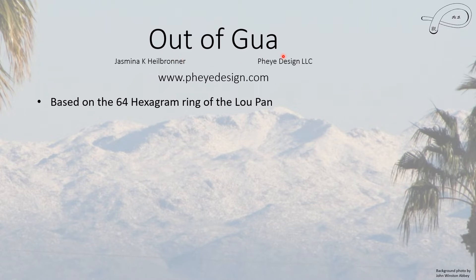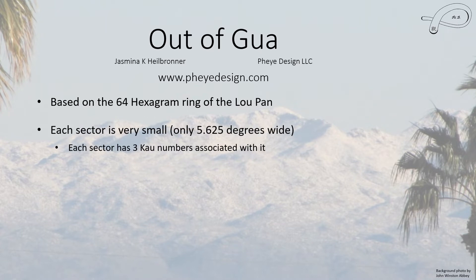It's a bit weird, the phrase itself, but it has some very profound effects. It is based on the 64-hexagram ring of the Lopan and is actually quite difficult to understand how it's created. However, once you understand how it's created, it is actually very easy to apply. So if you take 360 divided by 64, you get the number 5.625. And this is how wide in degrees each one of these sectors are. Each one of these sectors, in addition to having a hexagram, also has three Gua numbers associated with it. And these are the Out-of-Gua Gua numbers.